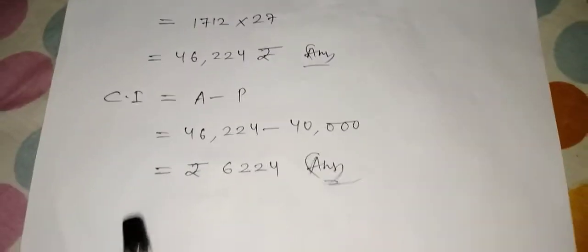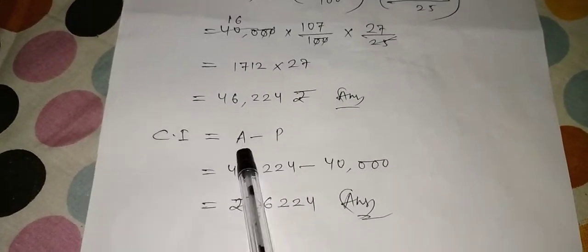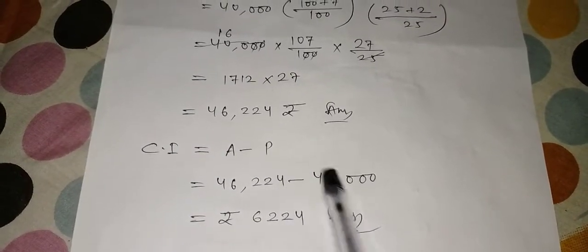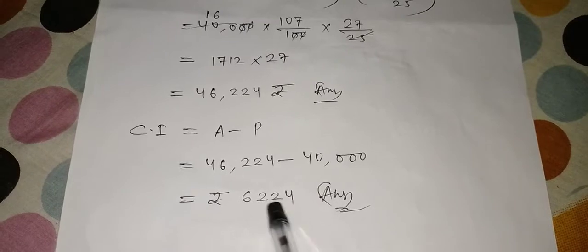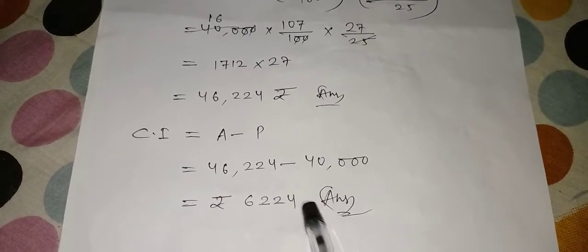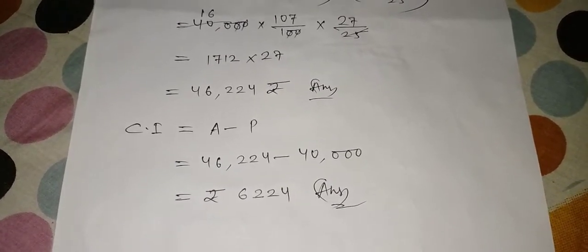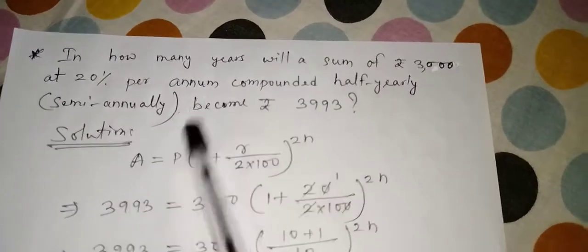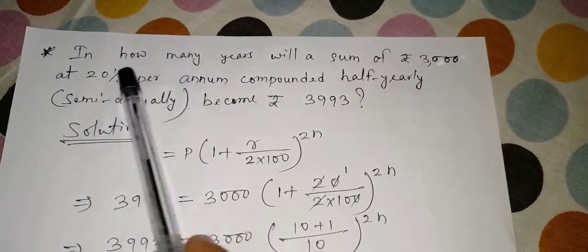So 46,224. So 40,000 has amounted to 46,224. We also need to find compound interest, so our compound interest formula will now be A - P. This is the value of A, and value of P is 40,000. If you subtract, 6,224. So these two answers we have got.